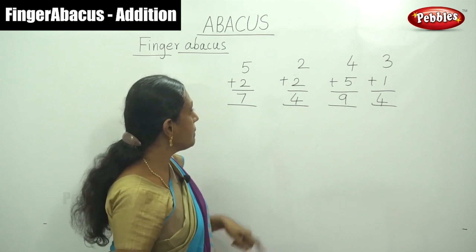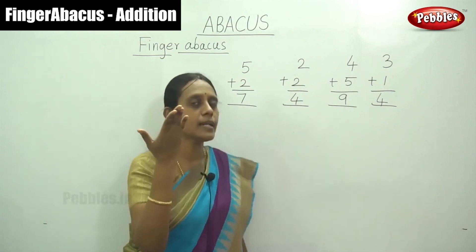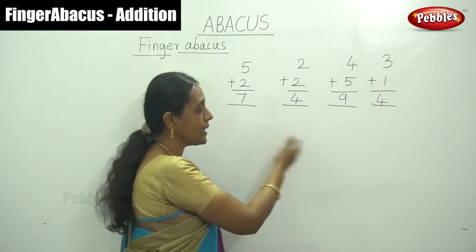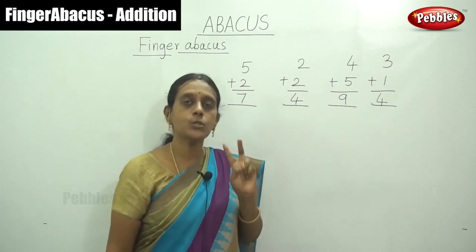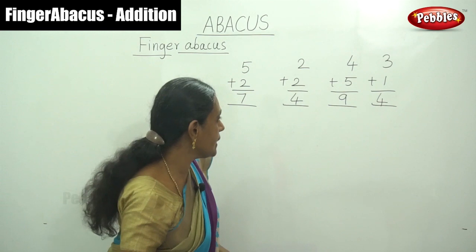This is the way by simple addition only using your right hand finger. And next addition, that is 2 digit number with single digit number.